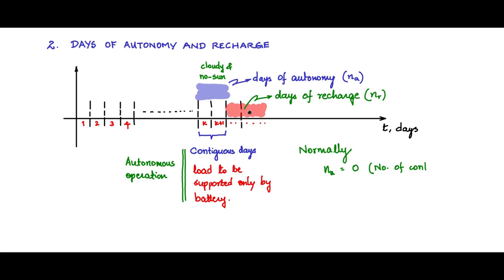So number of days, contiguous days the PV does not participate, is what we will associate with autonomous operation. So na will normally be zero, which means we assume that on every day PV does contribute to the load.